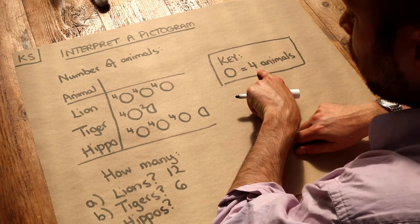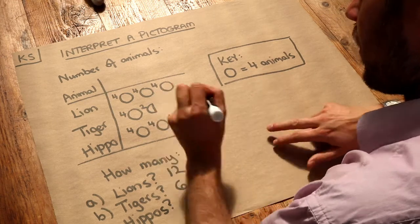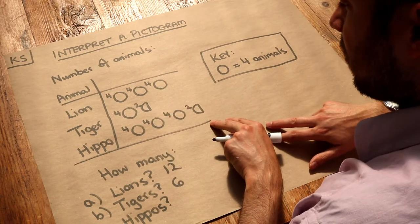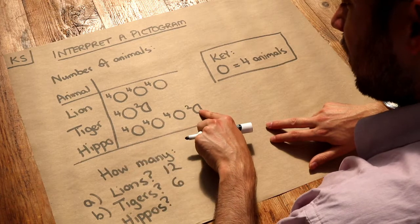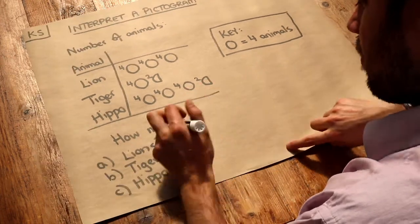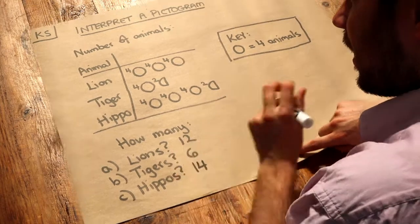So it's half of four, which is two. So in total, how many hippos do we have? Four plus four plus four plus two is fourteen hippos. And that is it.